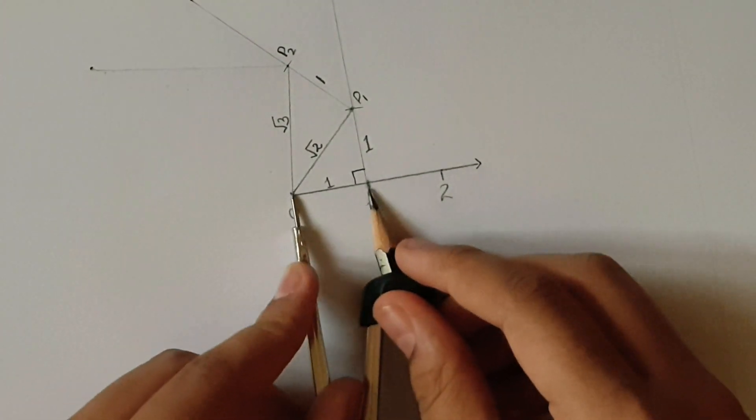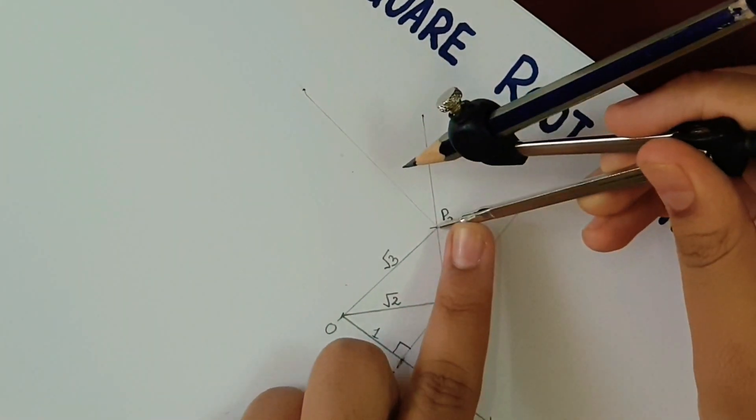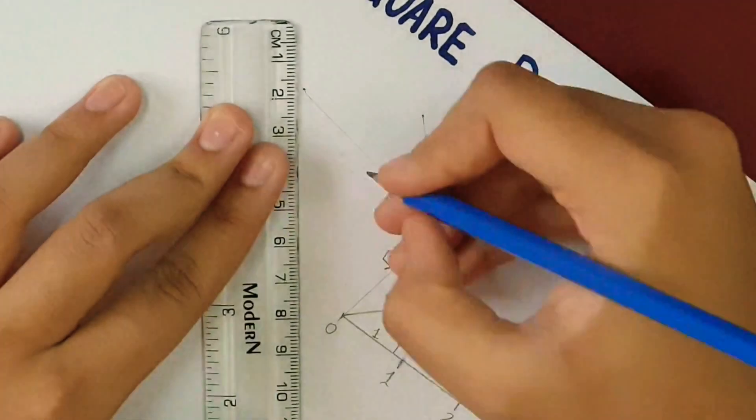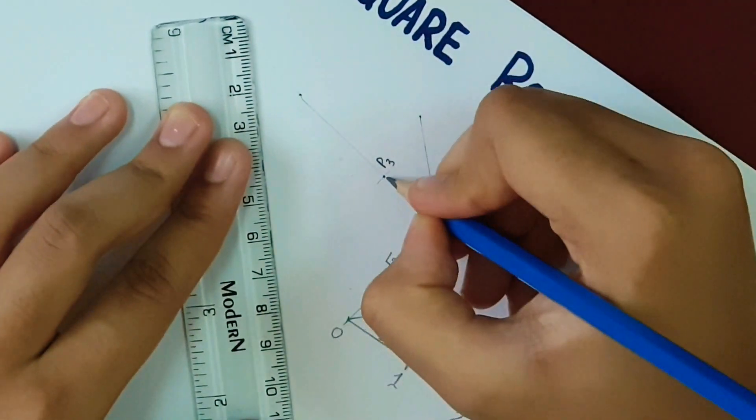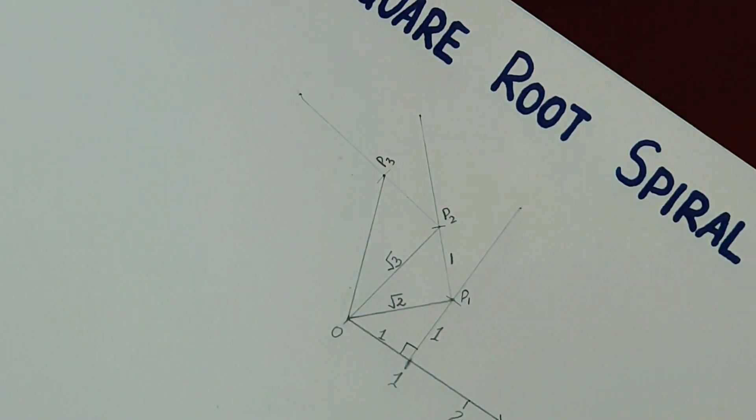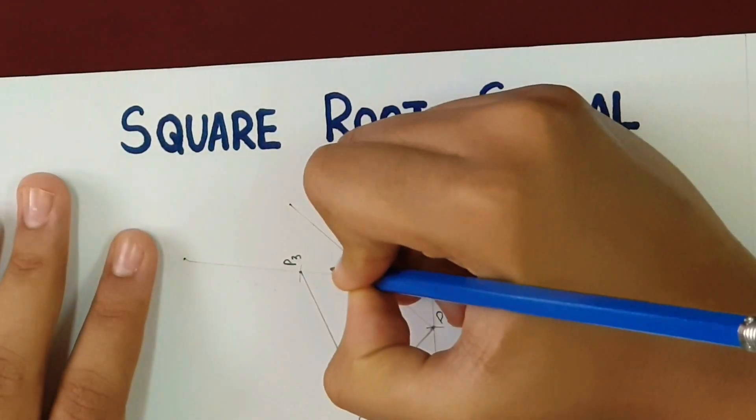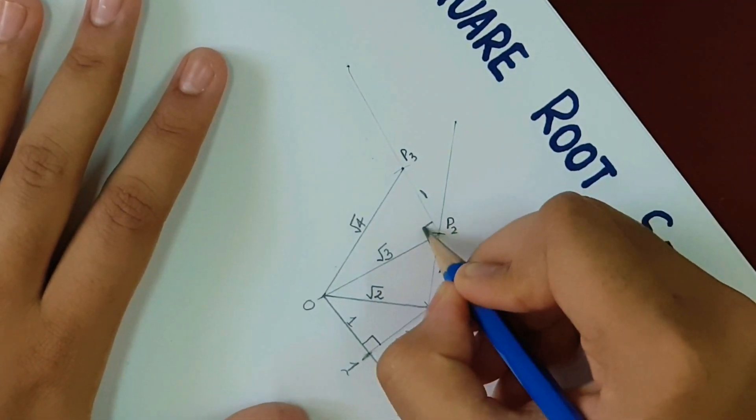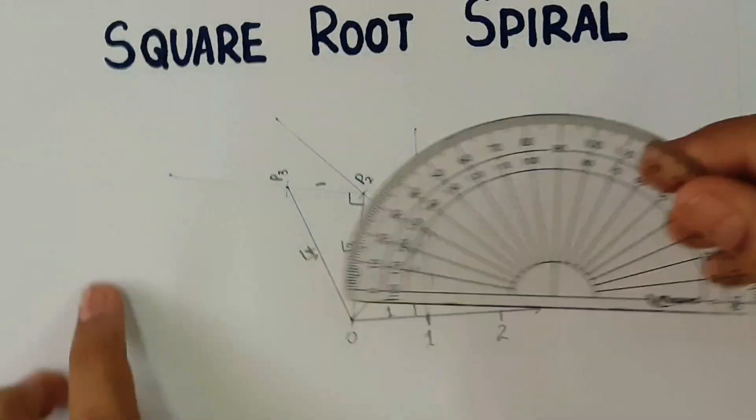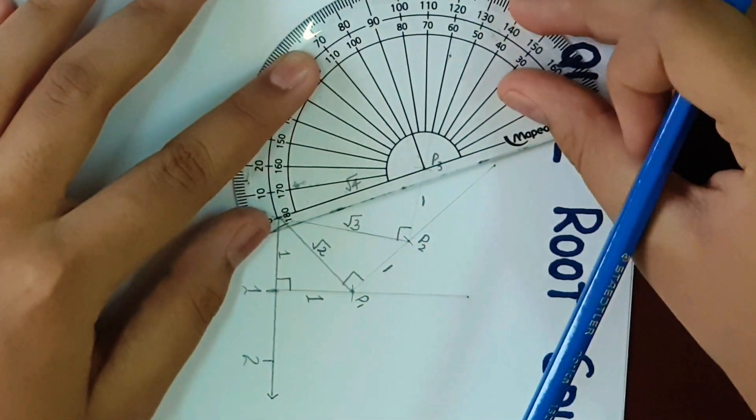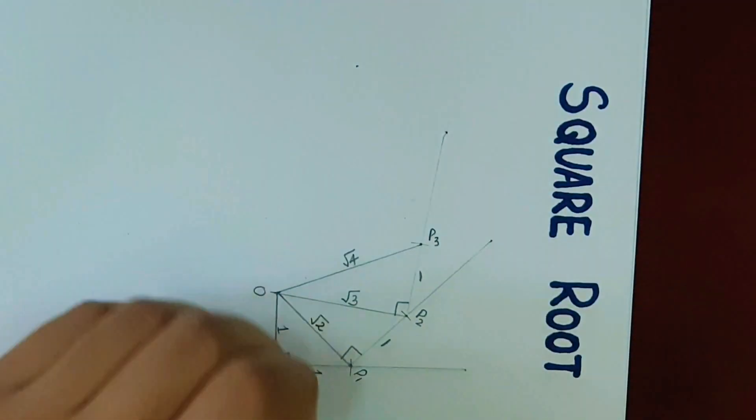After that, take the compass, measure one unit again, keep the point at P2 and cut an arc and mark that point as P3, and then join 0 and P3 together. Repeat the same procedure over and over again and remember to keep the same distance of the compass which is one unit.